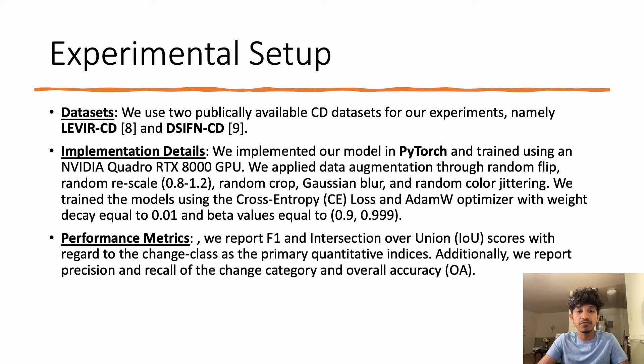We use a batch size of 16 to train the model. To compare the performance of our change detection with state-of-the-art methods, we adopt F1, Intersection over Union with regard to the change class as primary quantitative metrics. Additionally, we report precision and recall of the change category and overall accuracy.